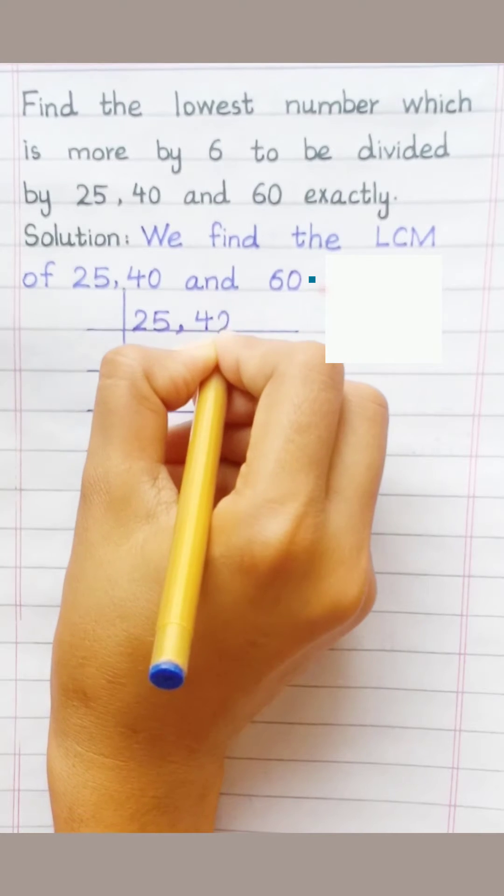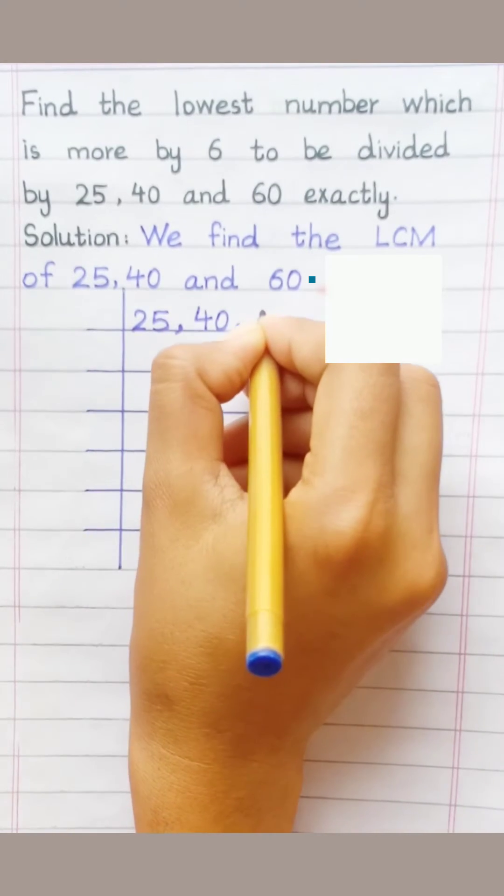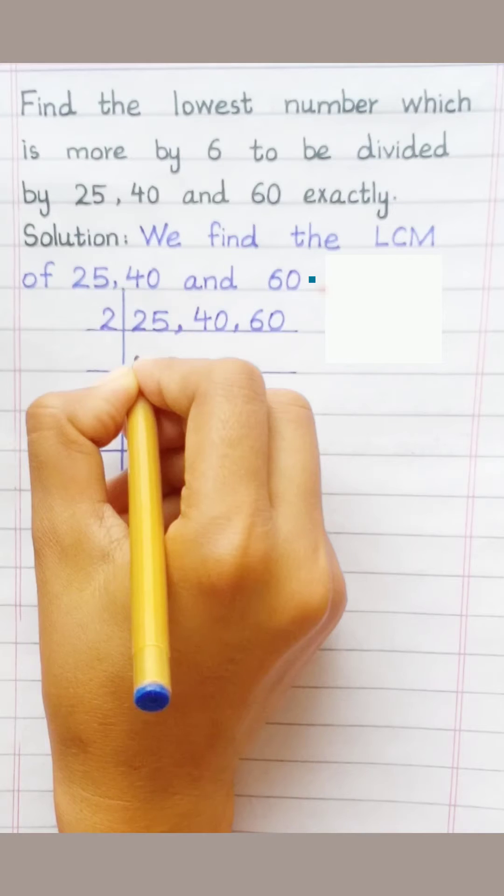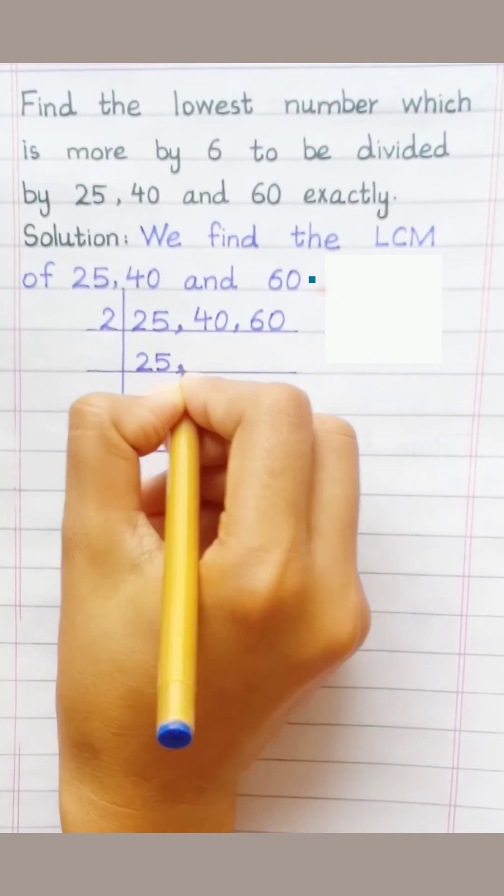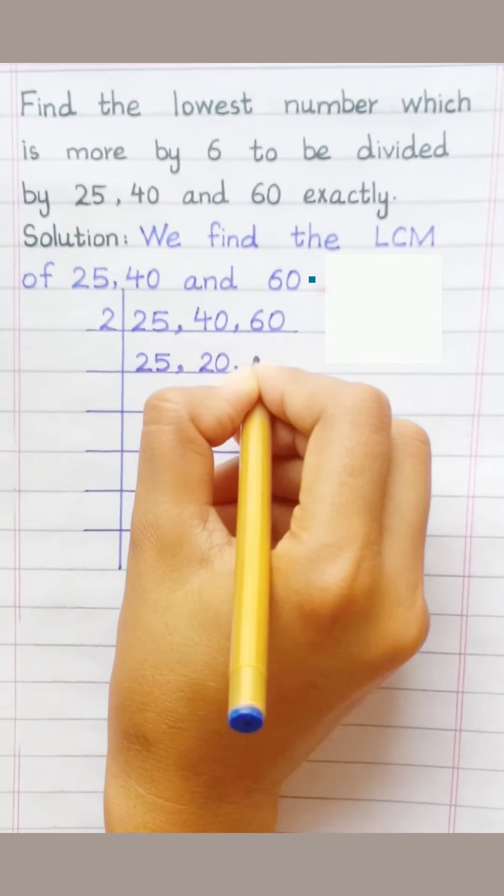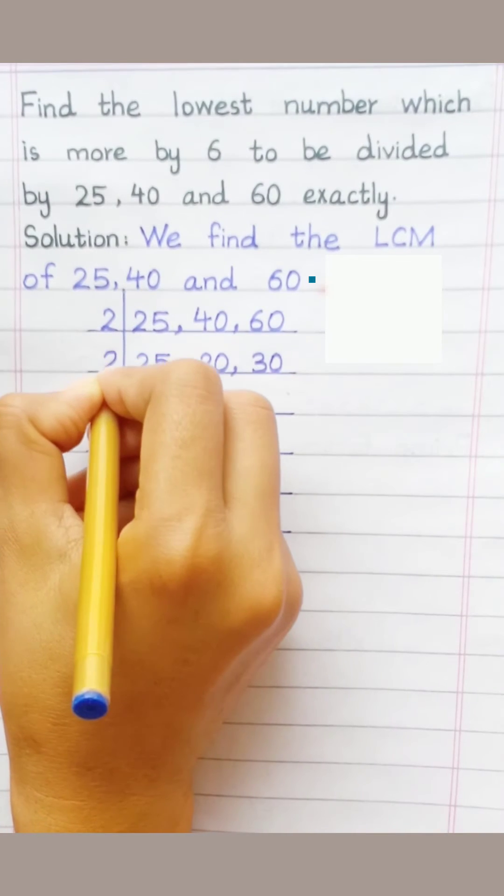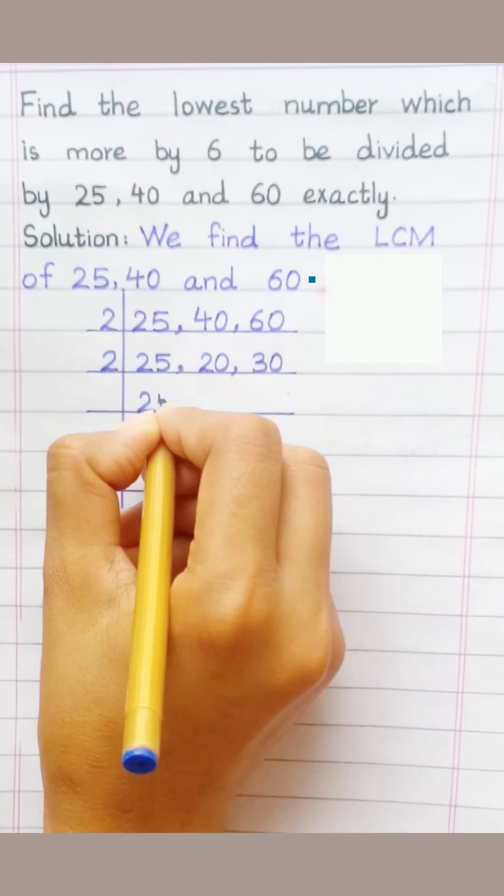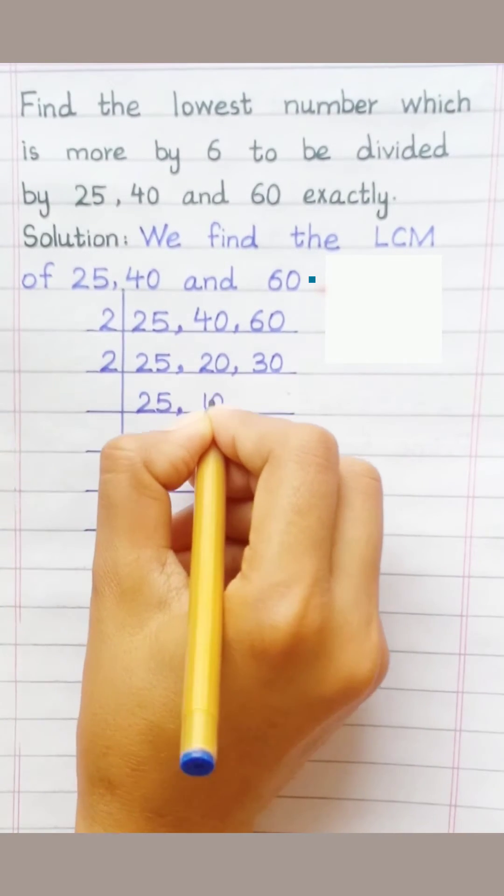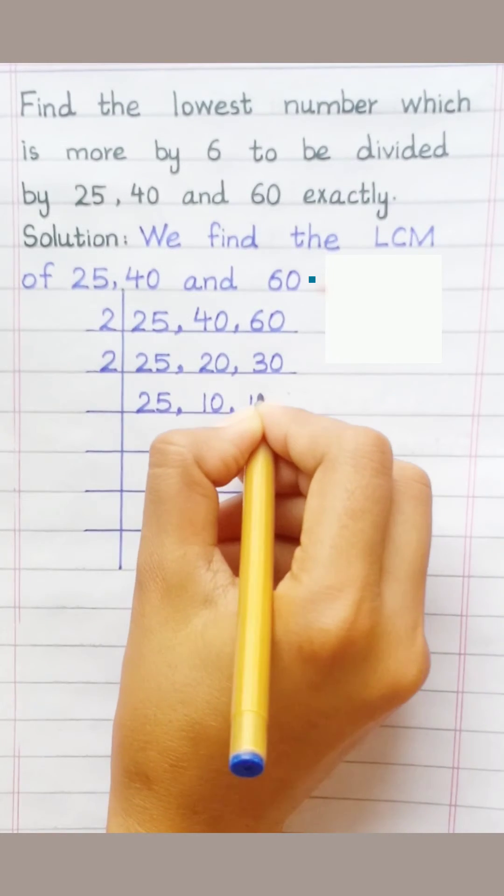25, 40, 60. Two into 40 is 20, two into 60 is 30. Two into 20 is 10, two into 30 is 15.